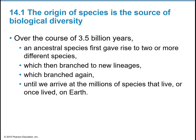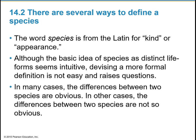Over the course of three and a half billion years, an ancestral species first gave rise to two or more different species, which then branched to new lineages and branched again and again until we arrive at the millions of species that lived or once lived on Earth. The word species is from the Latin for kind or appearance. Though the basic idea of species as a distinct life form seems obvious, devising a more formal definition is not easy and it does raise some questions.